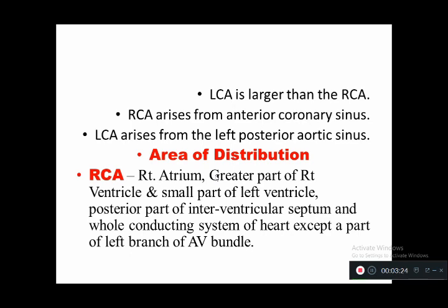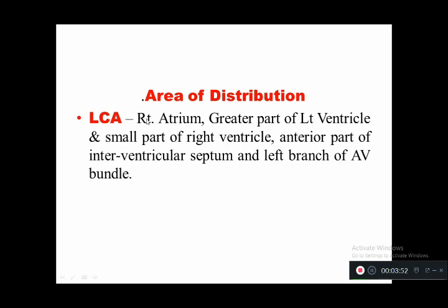The right coronary artery supplies the right atrium, greater part of right ventricle, small part of the left ventricle, posterior part of the interventricular septum, and the whole conducting system except a part of the left branch of the atrioventricular bundle. The left coronary artery supplies the left atrium, greater part of left ventricle, smaller part of right ventricle, anterior part of the interventricular septum, and the left branch of the atrioventricular bundle.